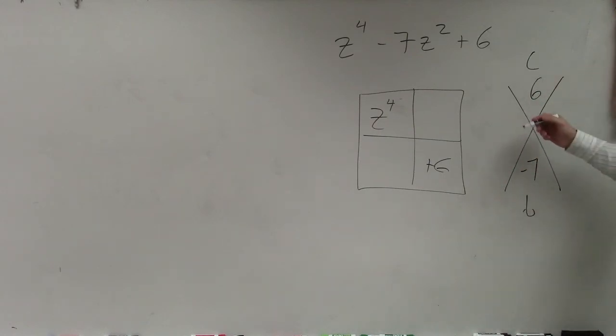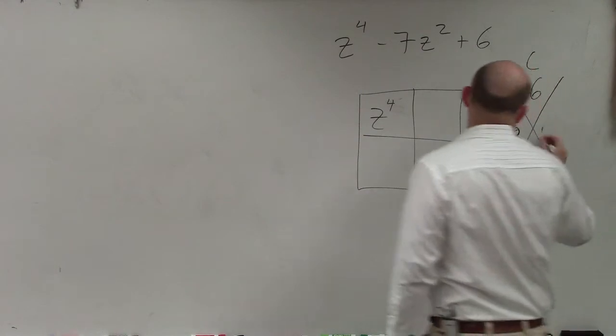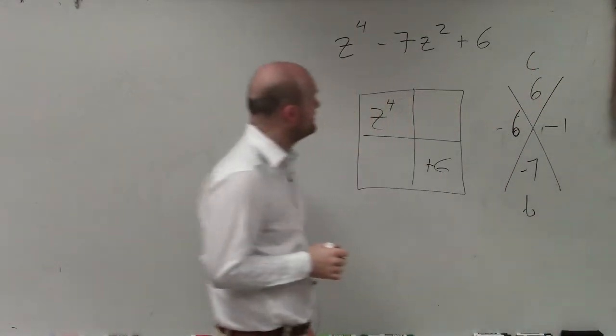Well, we know that what two numbers multiply to give you six and negative seven, that's going to be a negative six and a negative one. I'm sorry. Yes, negative six, multiply to give you negative six, add to give you negative seven.